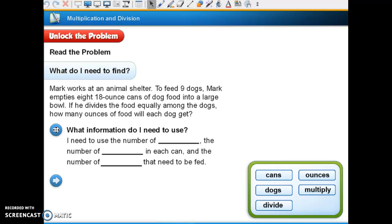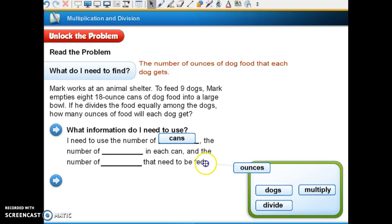Okay, this is in your little box. It says, what do I need to find? First of all, we have to answer that. The last sentence of our problem was how many ounces of food will each dog get? So that's what you need to find. What information do I need to use? I need to use the number of cans, the number of ounces in each can, and the number of dogs that need fed.